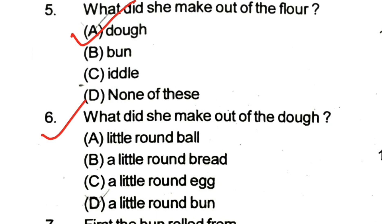Question 6: What did she make out of the dough? Options: little round ball, little round bread, a little round egg, a little round bun.